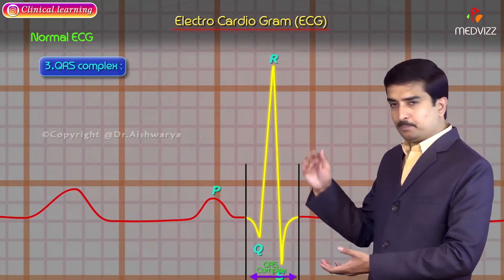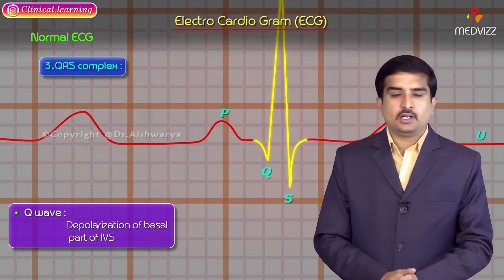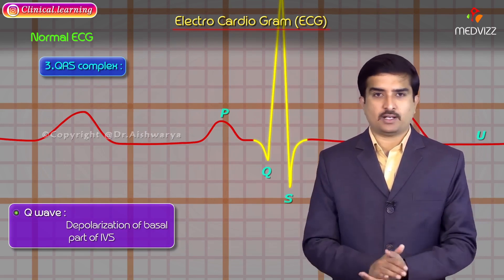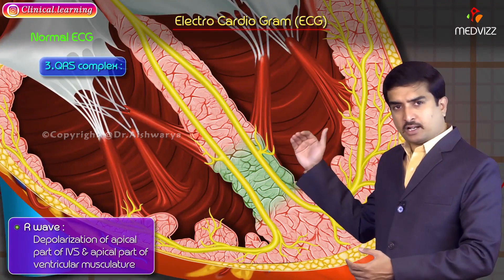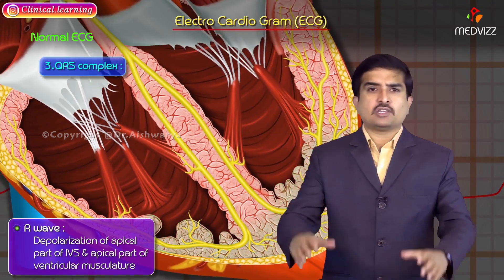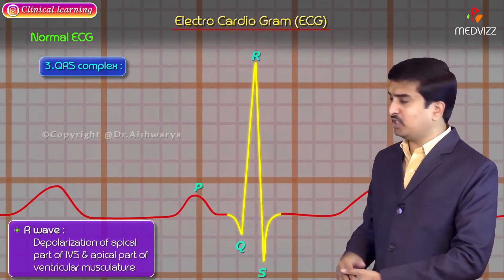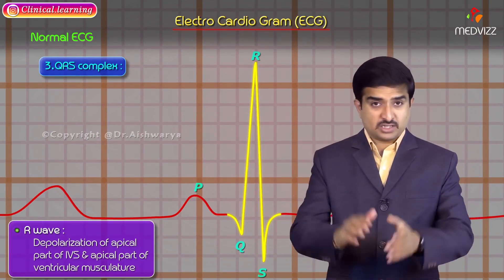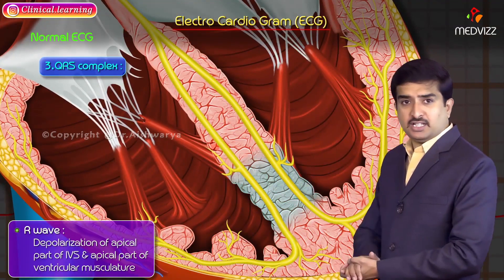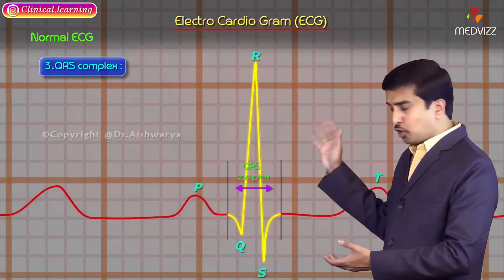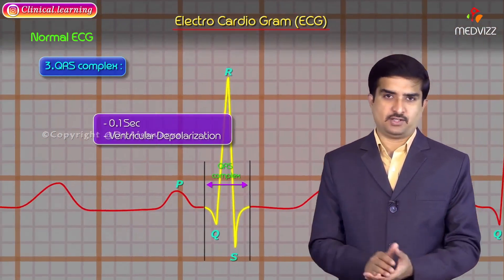After the PR interval, the next component is the QRS complex, which contains the Q wave, R wave, and S wave. The Q wave is due to depolarization of the basal portion of the interventricular septum. The R wave is due to depolarization of the apical portion of the interventricular septum as well as the apical portion of ventricular musculature, which is thicker, producing a higher amplitude. The total QRS complex is rapid at 0.1 second and represents entire ventricular depolarization.